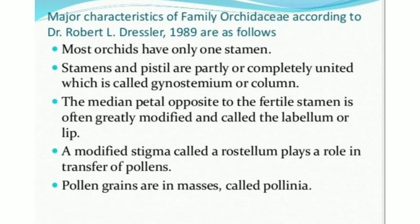Major Characteristics of Family Orchidaceae: Most orchids have only one stamen. Stamens and pistil are partly or completely united, which is called gynostemium or column. The median petal opposite to the fertile stamen is often greatly modified and called the labellum or lip. A modified stigma called a rostellum plays a role in transfer of pollens. Pollen grains are in masses called pollinia.